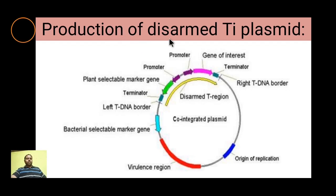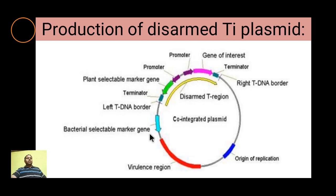For use in genetic engineering, the first methodology is production of a disarmed Ti plasmid. The portion of T-DNA between the left border and right border is removed and replaced with a plant selectable marker gene, a promoter, the gene of interest, and a terminator region. A bacterial selectable marker gene is also included, along with the virulence genes to help the bacteria infect the plant, which transfers the non-virulent T-DNA carrying our gene of interest. The origin of replication is also retained.